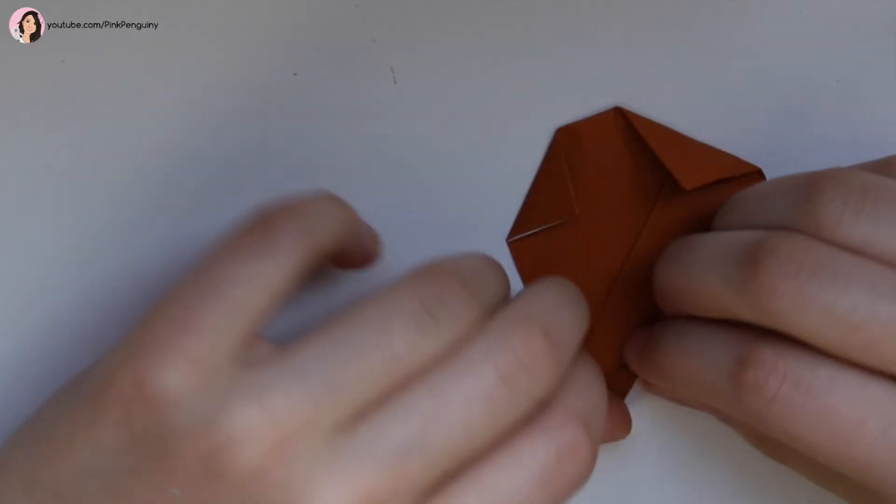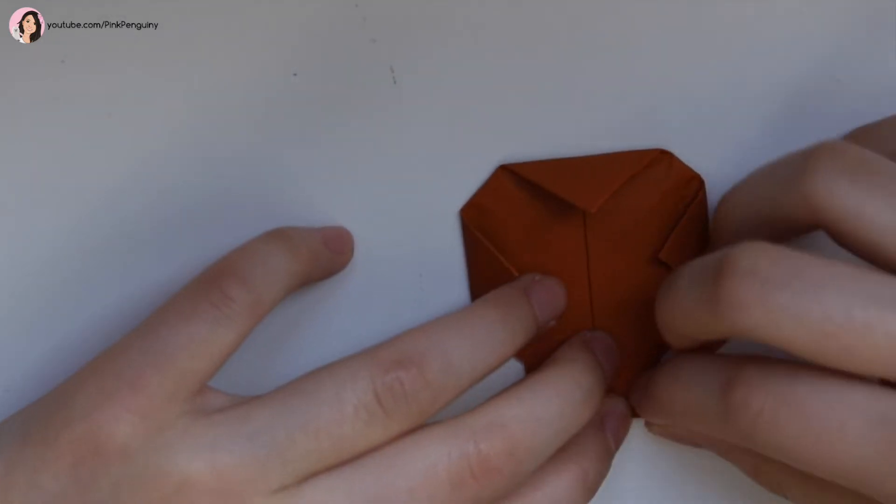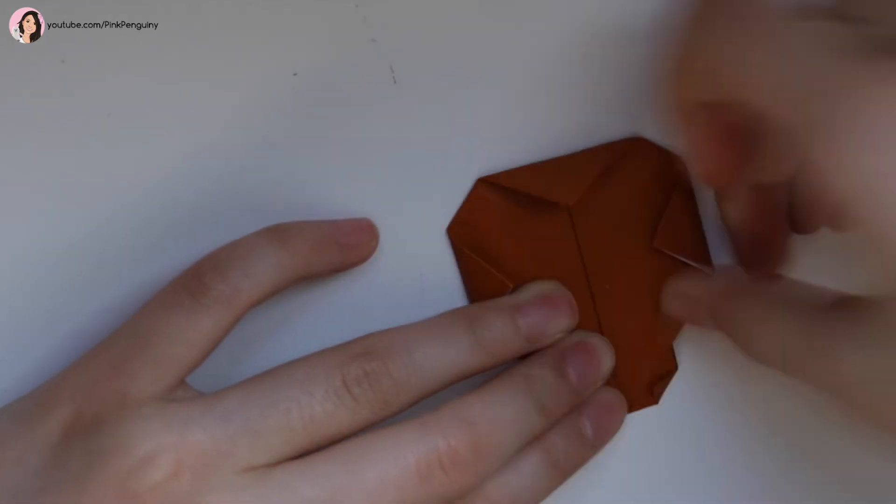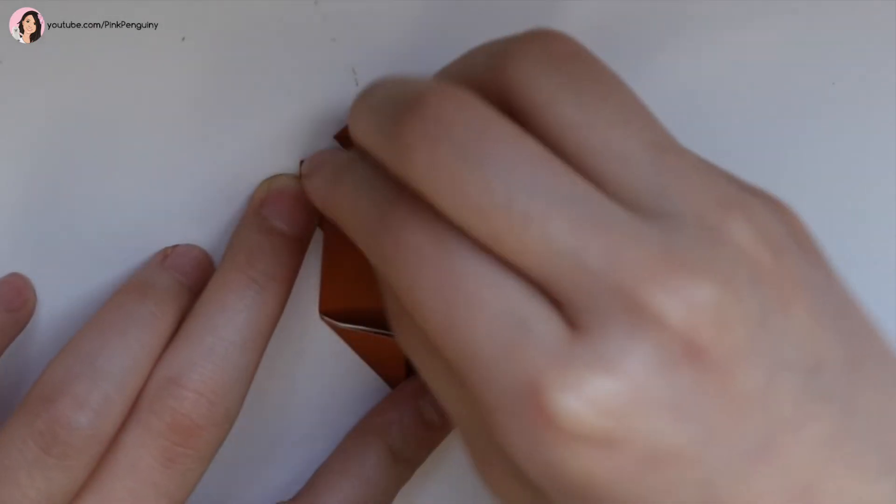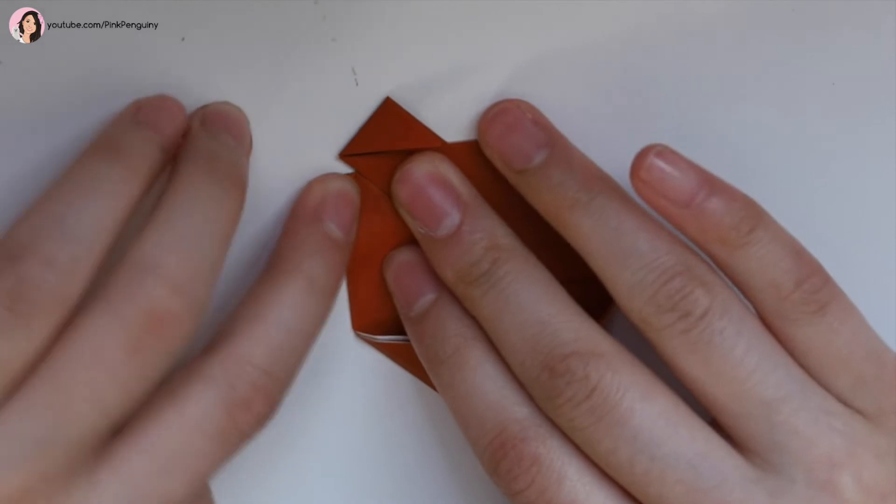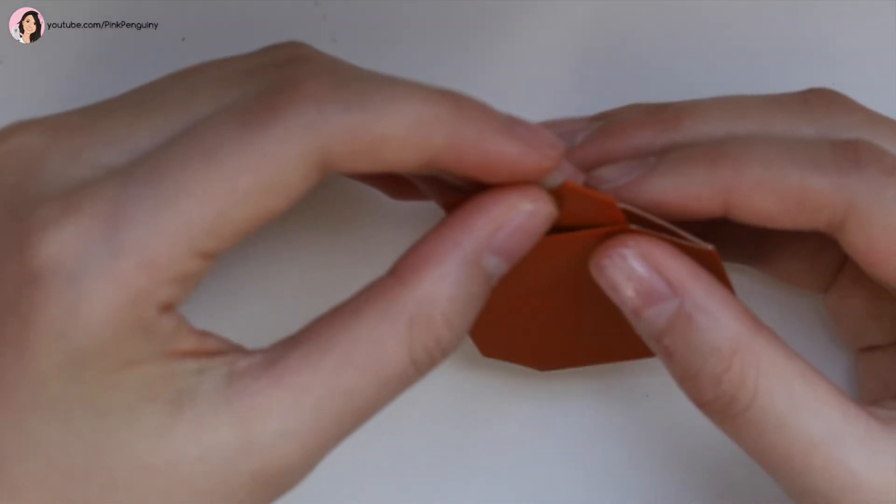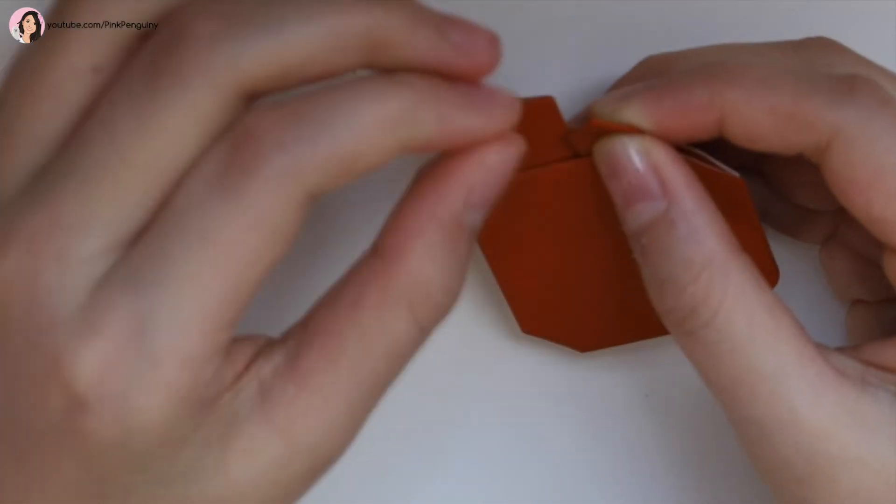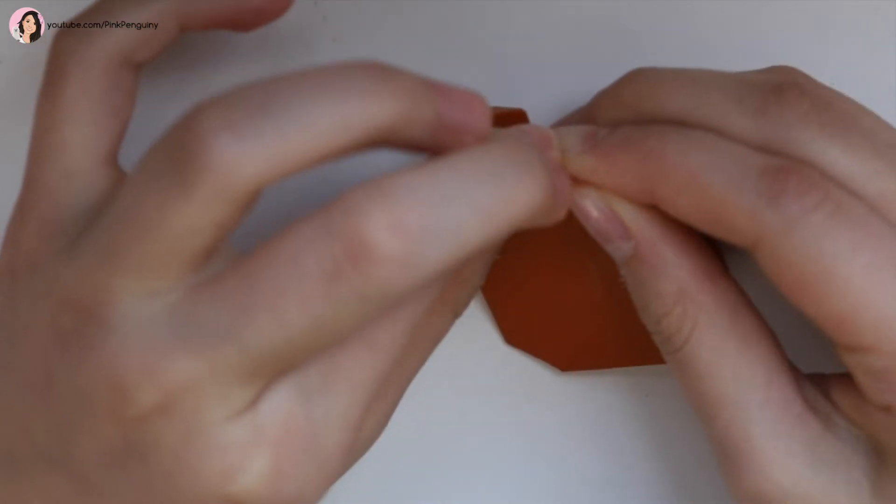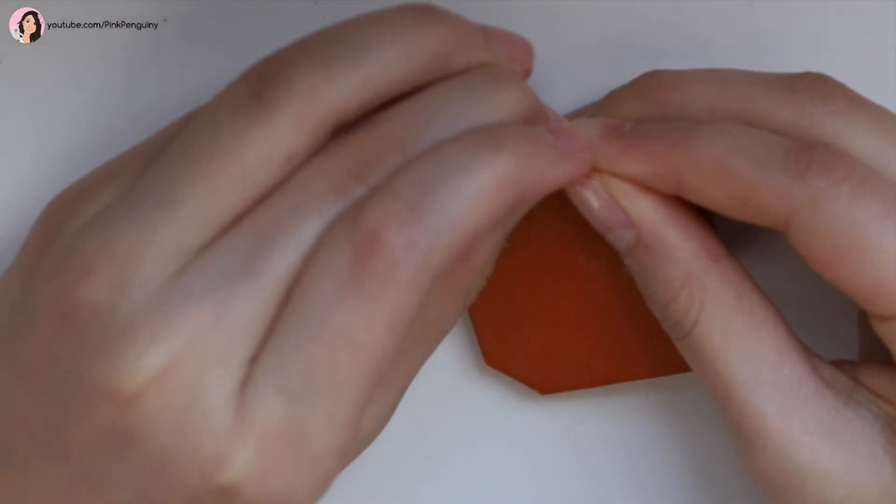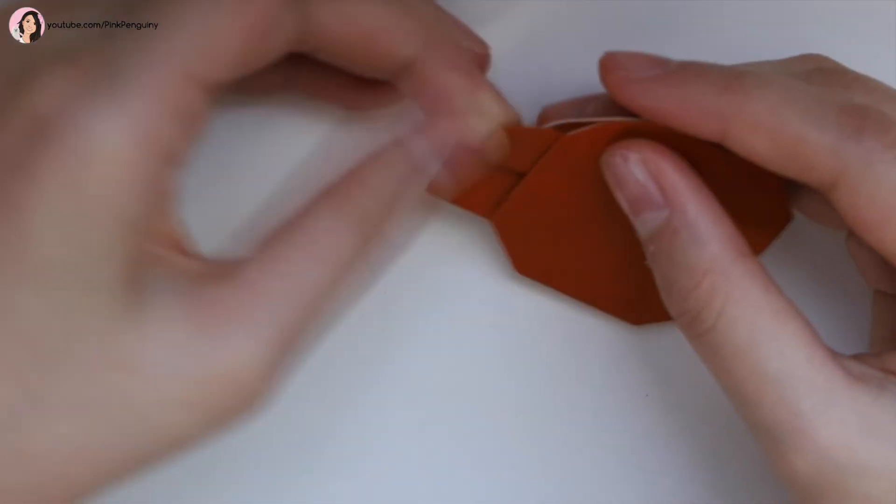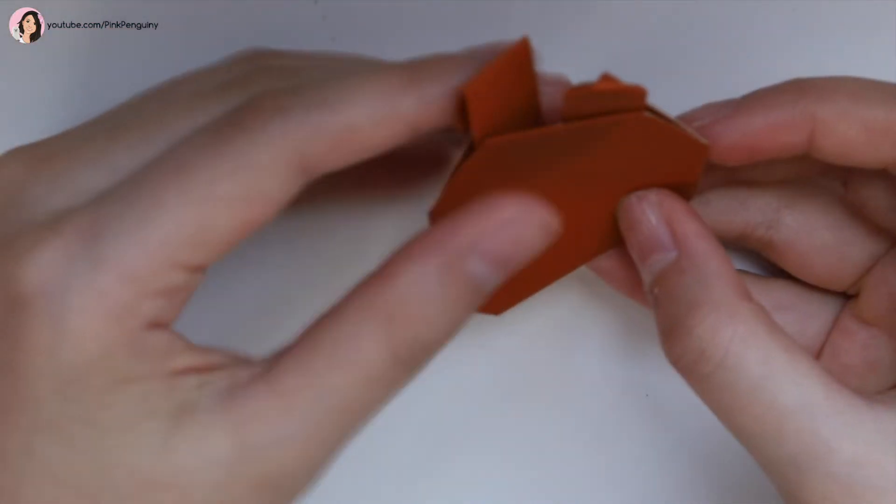And now you fold down the corners to make it look curved. And to make it look super curvy, if you want, you can push down the top to make it look like that.